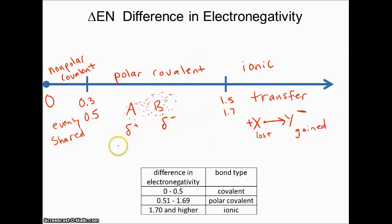So we usually say in this class that our range is 0 to 0.5 is going to be nonpolar covalent, 0.51 to 1.69, that in between area, is the polar covalent, and 1.7 and higher, we would say an ionic bond is going to form.